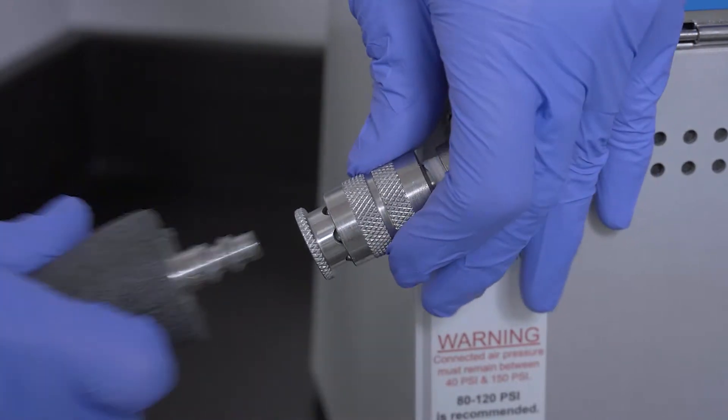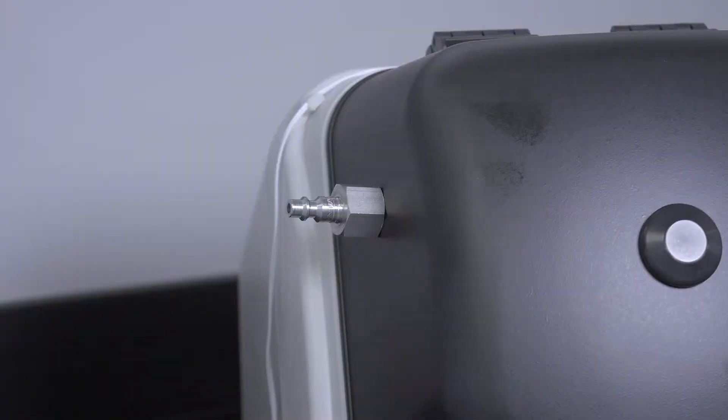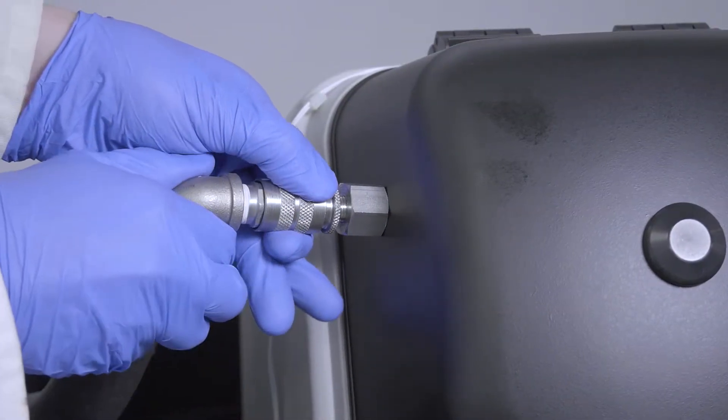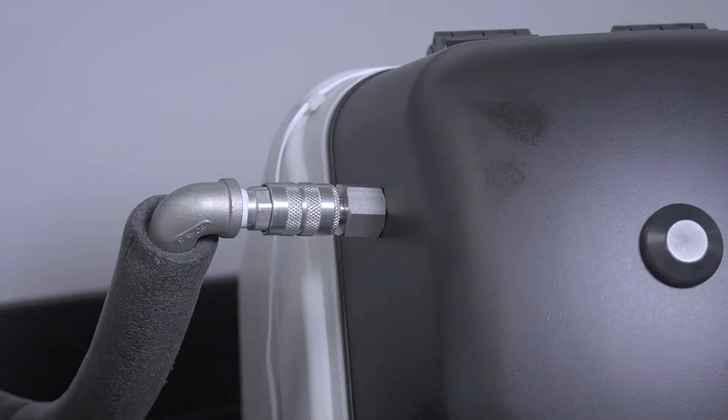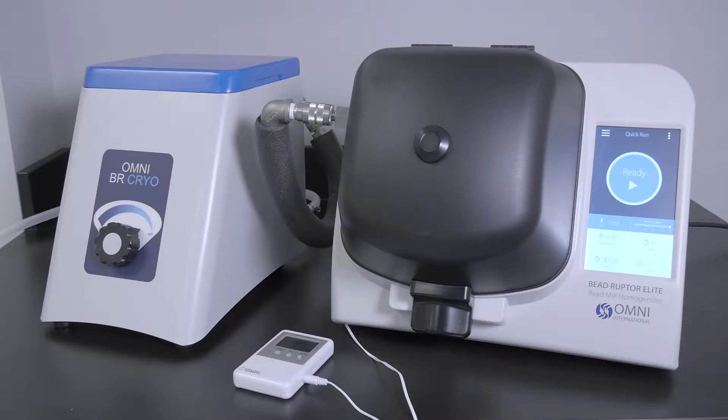Connect the straight end of the insulated cryo hose to the BeR Cryo unit. Connect the elbow end of the cryo hose to the BeadRuptor lid. The BeR Cryo unit is now ready for cooling.